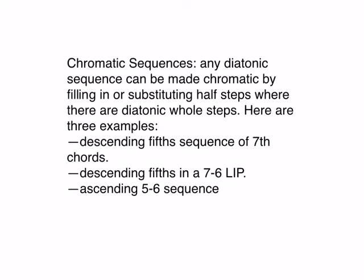For chromatic sequences, any diatonic sequence can be made chromatic by filling in or substituting half steps where there are diatonic whole steps. I'll show you three examples, and this is just part of what they show you in the book.